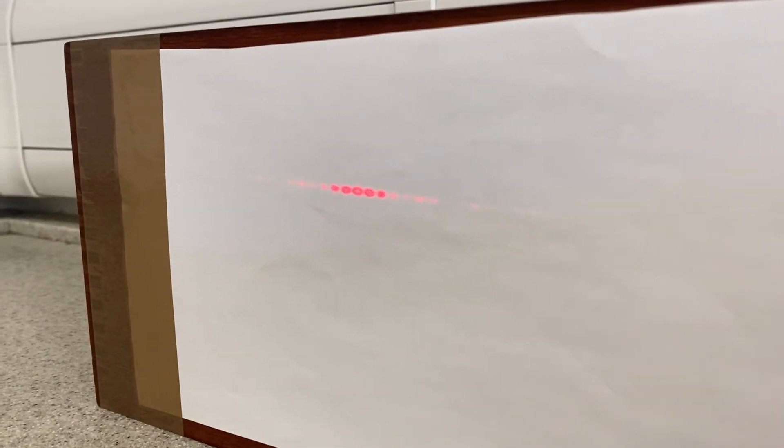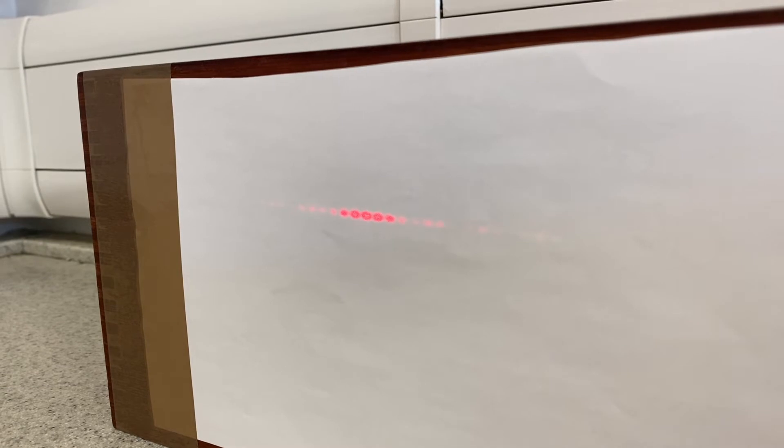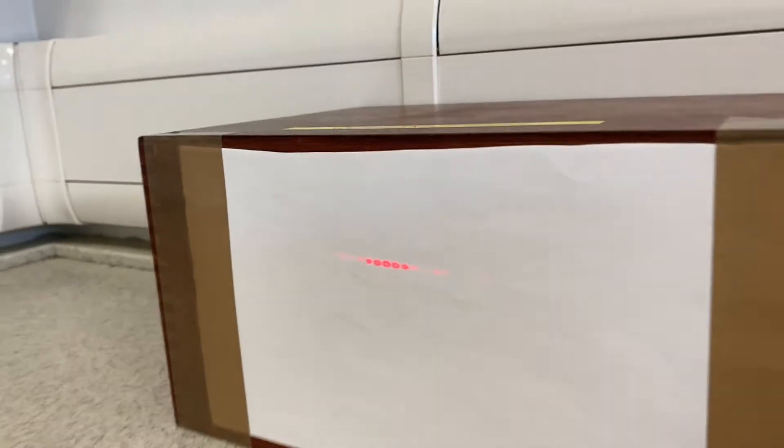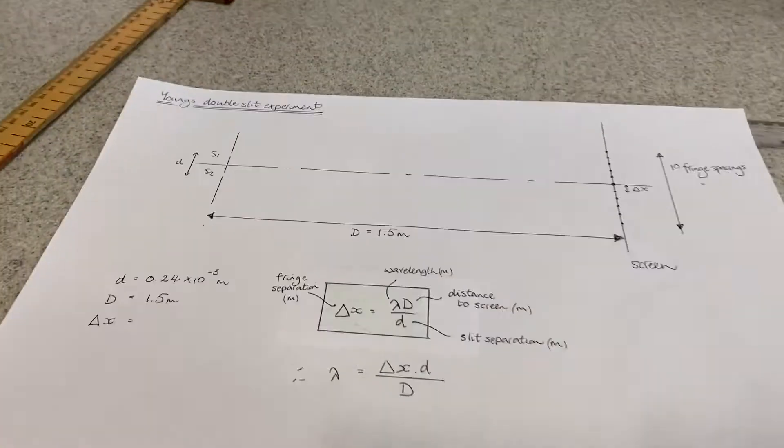Thomas Young did this experiment in 1798, I think. What this experiment demonstrated was that light behaves like a wave. So not only does this experiment prove that light's a wave,